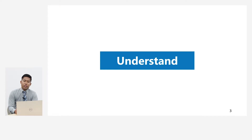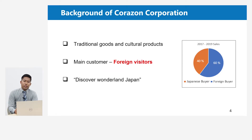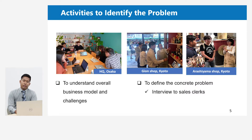First of all, this is the brief introduction of the collaborative company. They are selling traditional goods and cultural products. Their main customers are foreign visitors, and we can see in the system that their customers are foreign buyers. The key message of this company is 'Discover One-of-a-kind Japan.' As the activity to identify the problem, I had a meeting with the company supervisor to understand their overall business model and challenges. Then I visited the retail store and directly interviewed the sales staff to define the concrete problem.